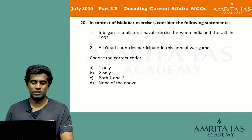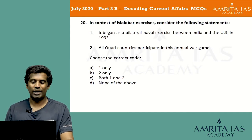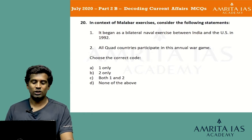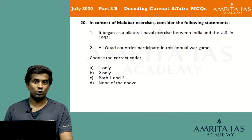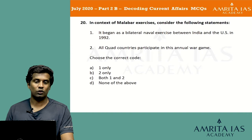In context of Malabar exercise, consider the following statements: 1) It began as a bilateral naval exercise between India and the US in 1992. 2) All quad countries participate in this annual war game. Choose the correct code: option A one only, option B two only, option C both one and two, option D none of the above.